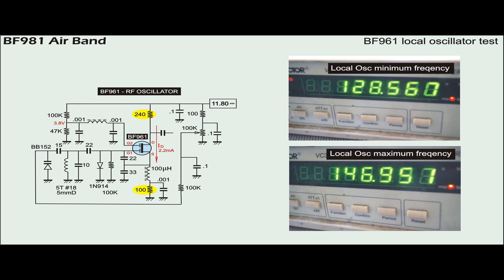Similarly for the Colpitts oscillator, the drain current was observed to be 2.2 mA at VG2 of 3.8 V. The circuit delivers 128 MHz to 147 MHz to the mixer with high stability.